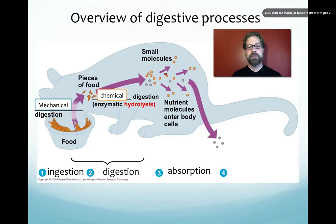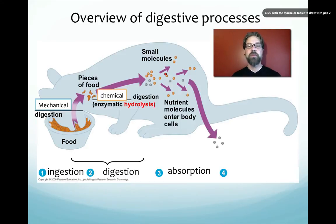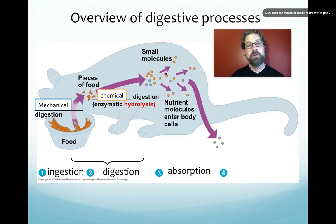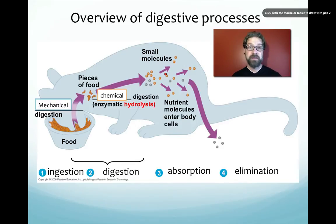Small nutrient molecules need to enter body cells. When these processes are finished, we're sometimes left with matter that didn't get absorbed or utilized — that's what we call waste — and waste gets eliminated in living things.